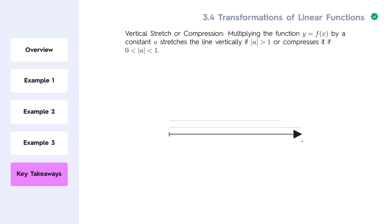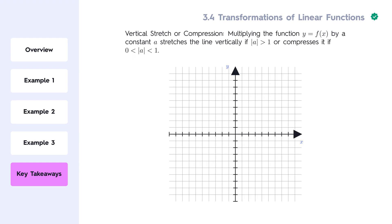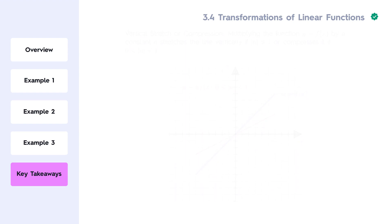We saw how multiplying the function by a constant affects the steepness of the graph. Multiplying the function y equals f of x by a constant a stretches the line vertically if absolute value of a is greater than 1. Similarly, if the absolute value of a is between 0 and 1, the function is compressed.